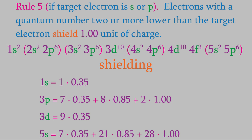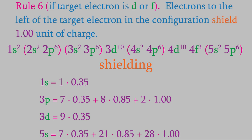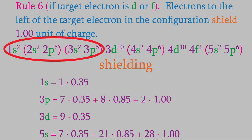So much for target electrons in s or p orbitals — what about target electrons in d or f orbitals? Those are taken care of in the next of Slater's rules, which says that every electron in the configuration to the left of a d or f target electron shields one whole unit of charge. If we look at the 3d orbital, there are 18 electrons to the left of it, so these shield 18 units of charge.